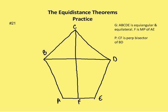The first problem, number 21: we're given that ABCDE is equiangular and equilateral, and that F is the midpoint of AE, and we want to prove that CF is the perpendicular bisector of BD. I ask my students to mark up the diagram first, figure out what direction they're going to go, and how they want to solve the problem, then write a two-column proof.